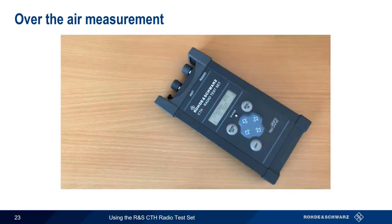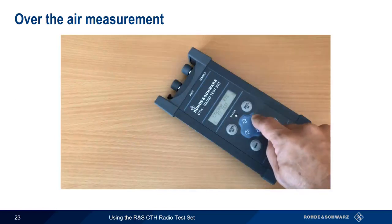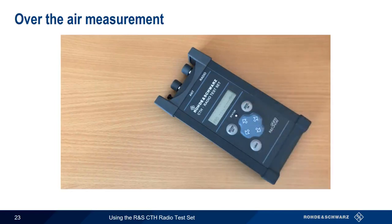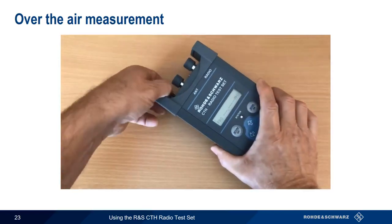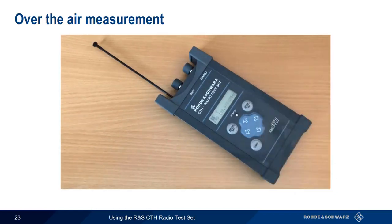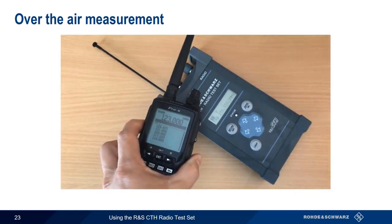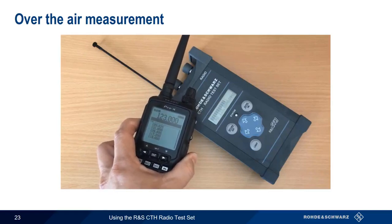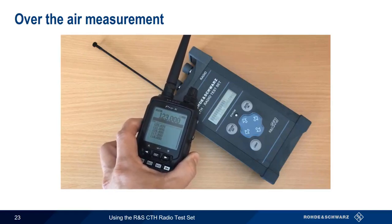We start an over-the-air measurement by first entering the over-the-air test mode. The next step is to fully extend the CTH's built-in antenna. The frequency and field strength measurements begin automatically. If we key up a nearby transmitter, the CTH measures and displays the frequency and field strength. No cable connection is required.